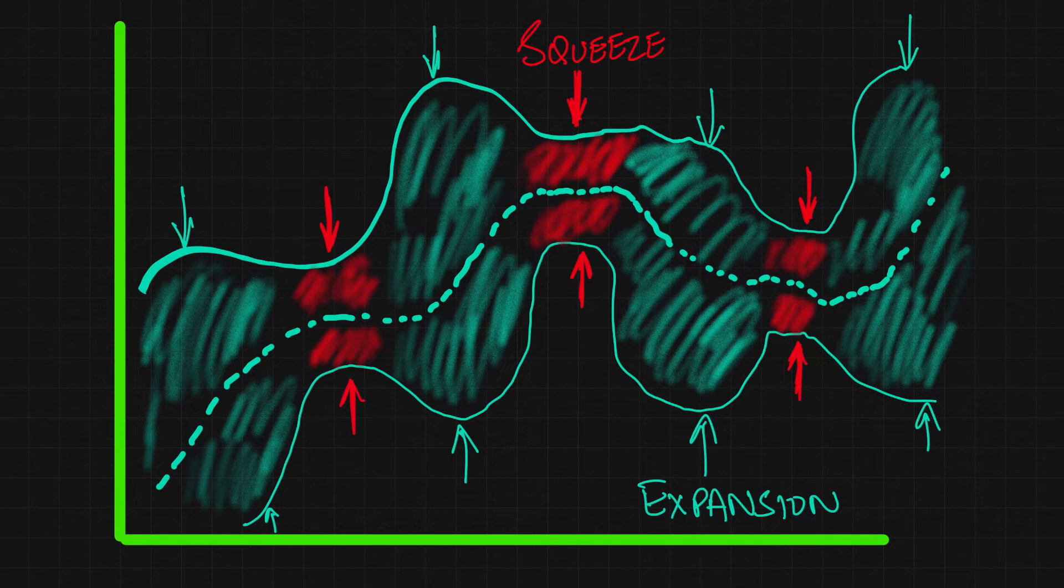And this pattern is really important for our decision making, because every time it goes through a phase of squeeze, it is a signal that there is going to be an upcoming expansion. It's just that we need to be really careful in which direction this expansion will happen.